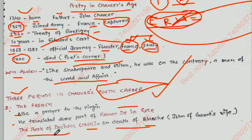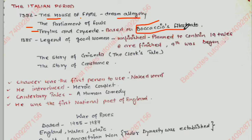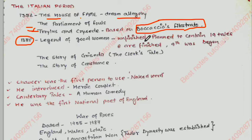In 1369, we move to the Italian Period, from around 1382. In the Italian period he wrote: The House of Fame — a dream allegory; The Parliament of Fowls; and Troilus and Criseyde, which is based on Boccaccio's Filostrato. In 1385, he wrote the Legends of Good Women, which was unfinished — it planned to contain 19 tales but only 8 were completed and the 9th was just begun.